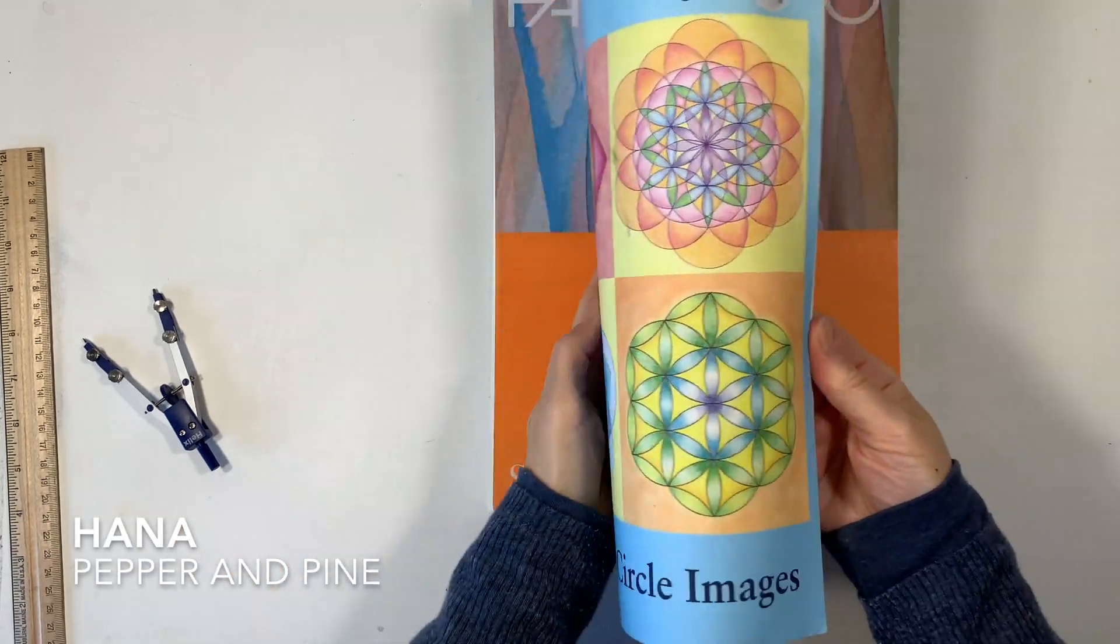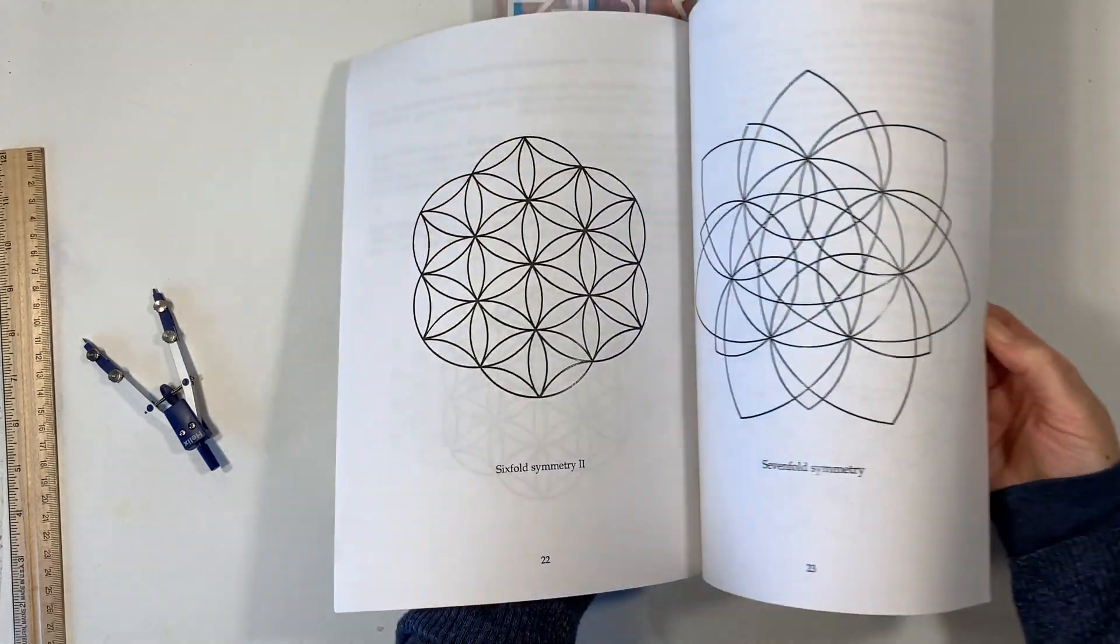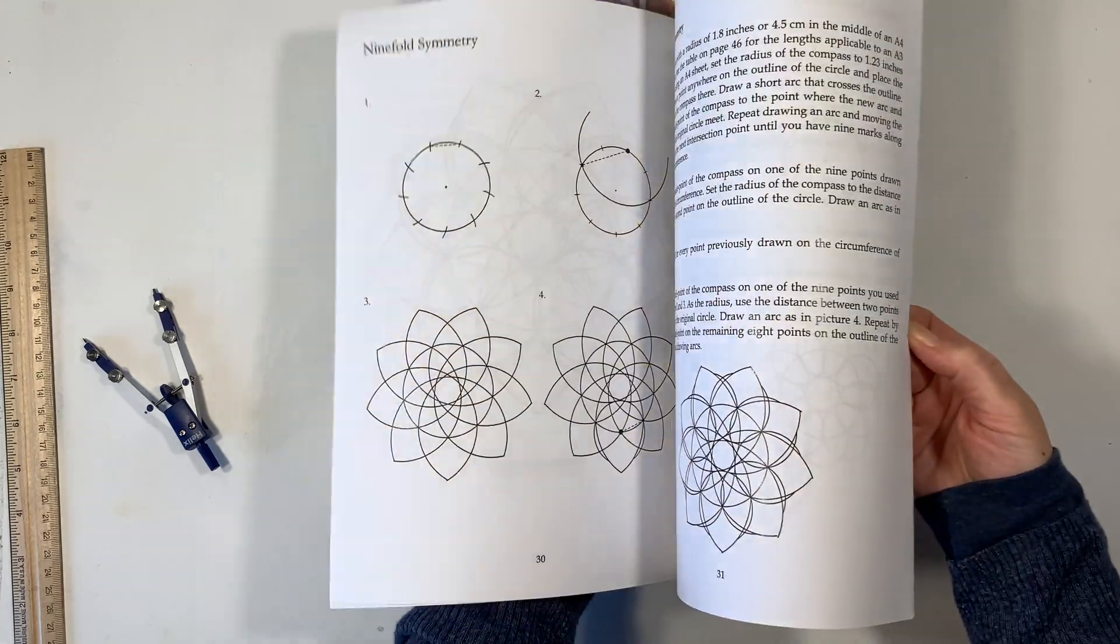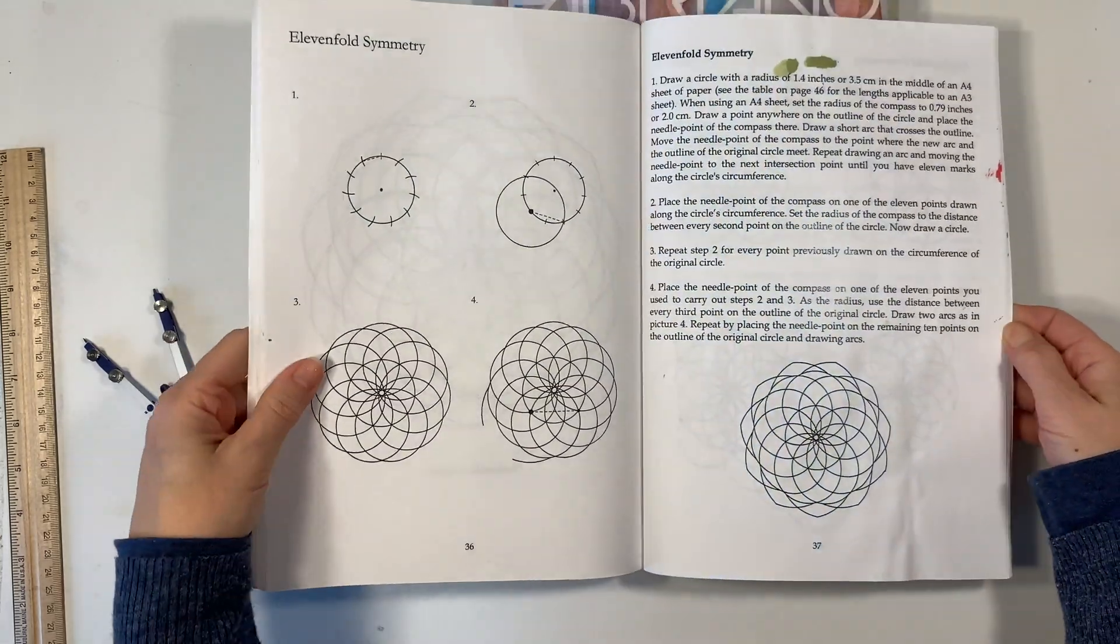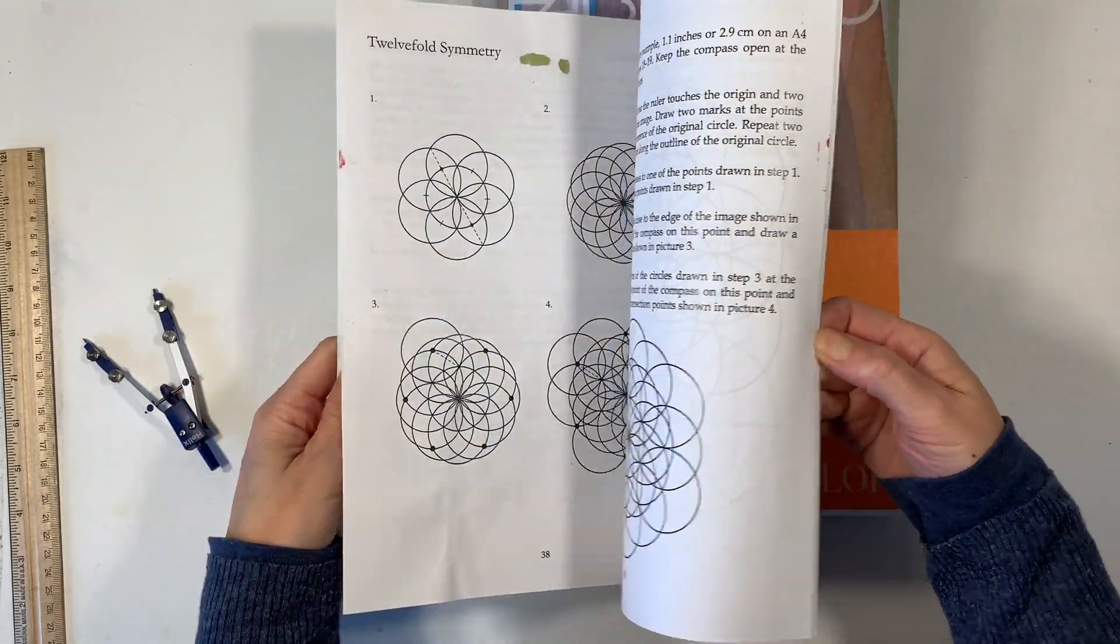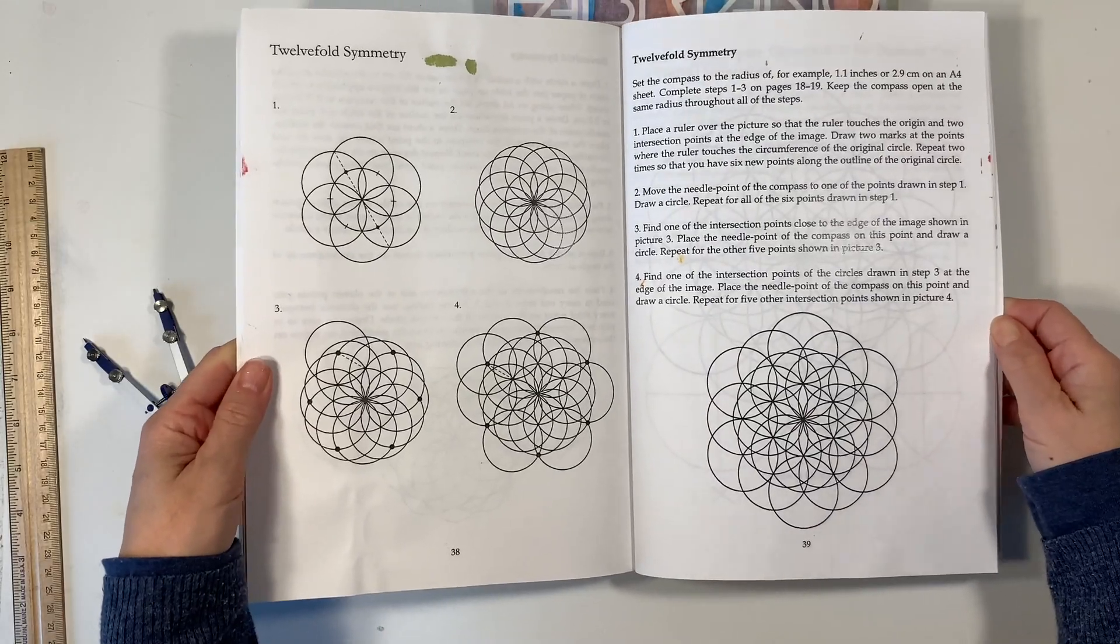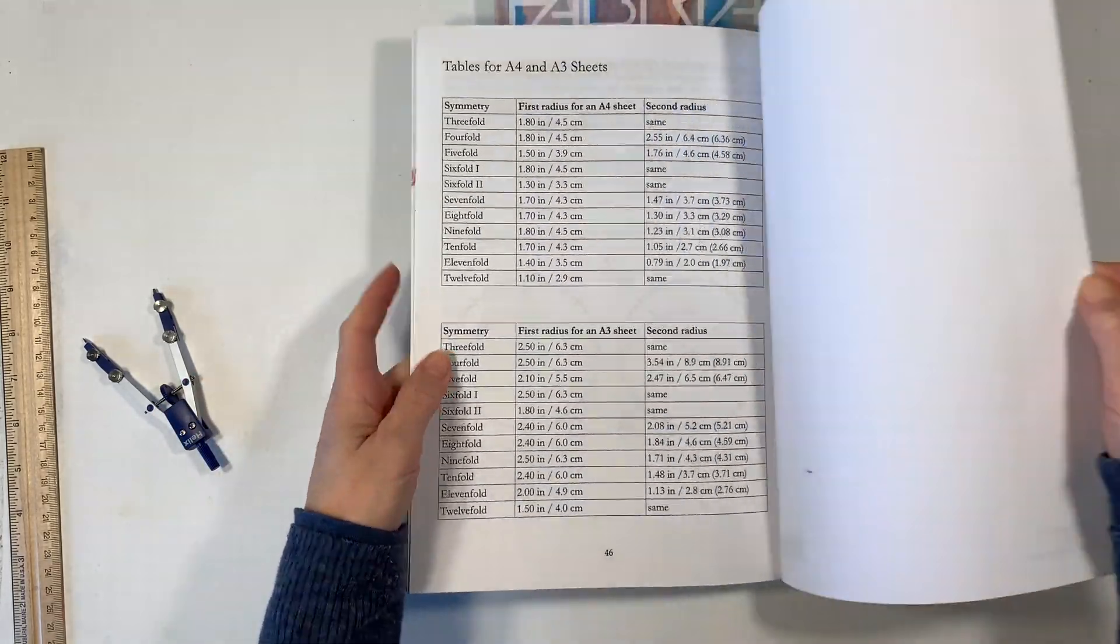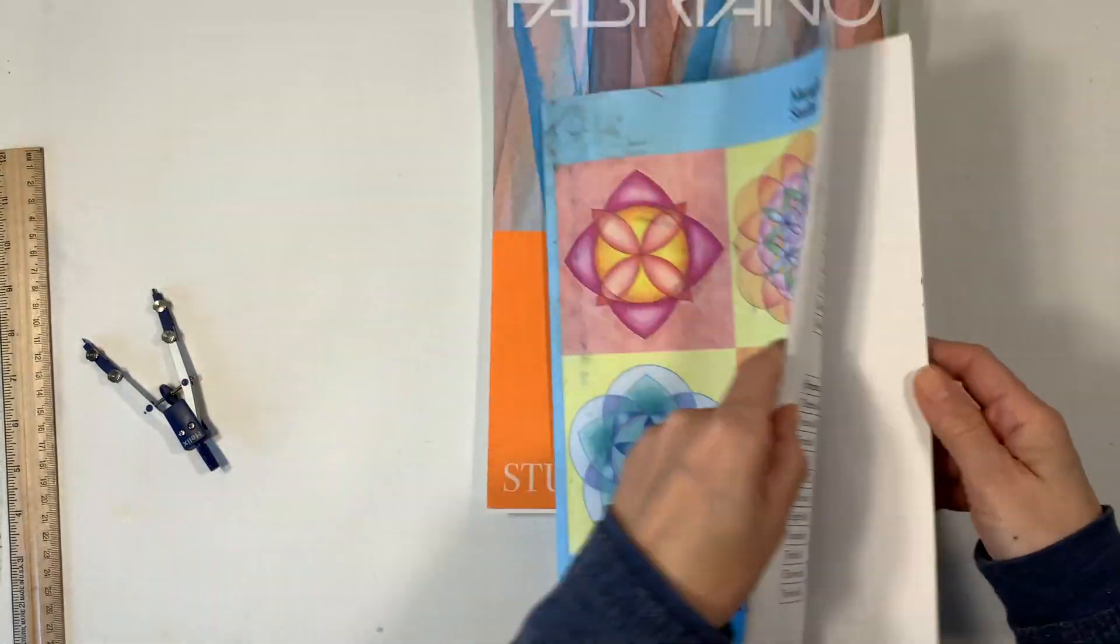Hi everybody, my name is Hannah and this is Pepper and Pine and I have a geometry tutorial to share with you today. We are working through this book called Drawing Circle Images and we have worked through all the fold symmetries up to 12-fold symmetry. Today I want to share with you how to achieve 12-fold symmetry.